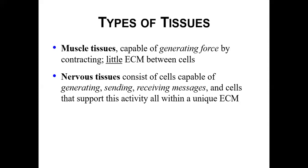Tissue type number three is muscle tissue. Muscle tissue has a couple of distinguishing factors: one is its ability to contract, which is unique compared to the other tissue types, and when it contracts it generates force. There's very little extracellular matrix in muscle tissue. The three types of muscle tissue are smooth muscle, skeletal muscle, and cardiac muscle.